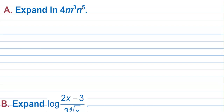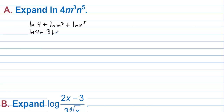Expand natural log of (4m³n⁵). We can write this as ln 4 plus ln(m³) plus ln(n⁵) — using addition because we have multiplication inside. Bringing the powers down in front gives ln 4 plus 3 ln m plus 5 ln n.